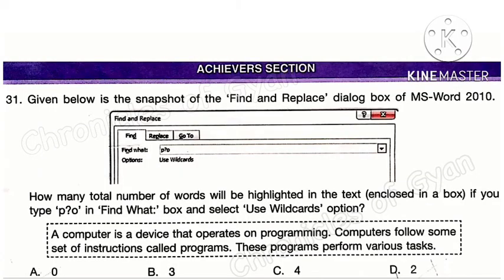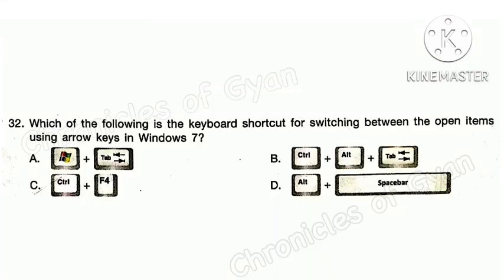Question 31. Given below is the snapshot of the Find and Replace dialog box of MS Word 2010. How many total words will be highlighted in the text and enclosed in a box if you type P?O in the Find word box and select the Use Wildcards option? Correct answer is option B: 3. Question 32. Which is the keyboard shortcut for switching between open items using arrow keys in Windows 7? Correct answer is option B: Ctrl + Alt + Tab.